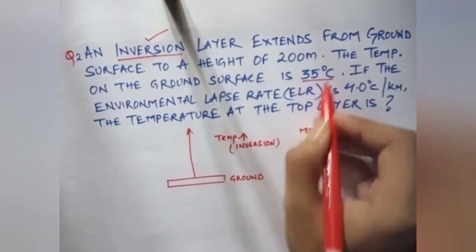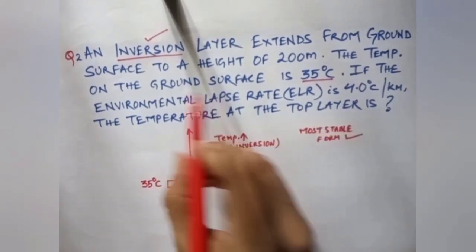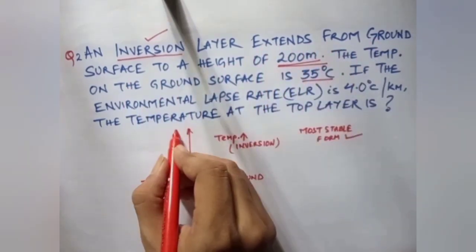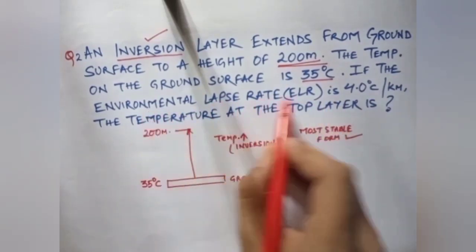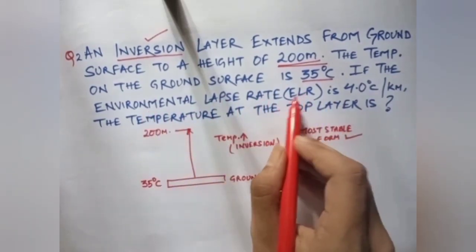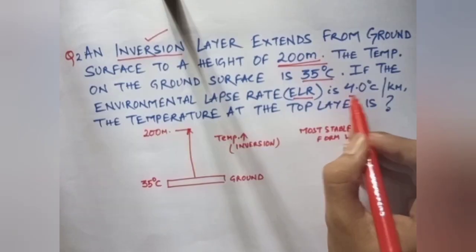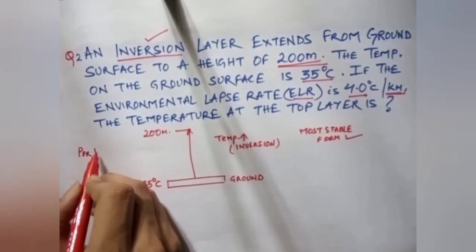Now in the ground temperature it is given 35 degree celsius. In the question it is given that 200 meter the inversion layer exists. So this uppermost part is the 200 meter. Next, environmental lapse rate: actually ELR is 6.5 degree celsius, but in question it is given 4 degree celsius per kilometer. So if we have a value in question, then we have to follow according to it.